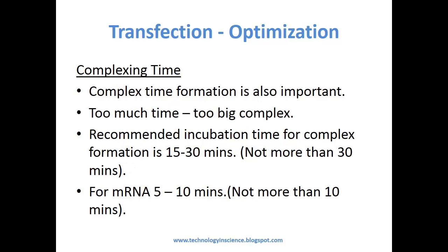Complexing time is yet another important factor that needs to be optimized for better transfection efficiency. If the complexing time is too long, the complex formed will be large, which will be difficult for the cells to take up, thereby reducing transfection efficiency. The ideal complex formation time is 15 to 30 minutes, but this needs to be experimented with as different cell lines behave differently. Complex formation time above 30 minutes will yield low transfection efficiency. For mRNA transfection, the ideal complex formation time is 5 to 10 minutes.